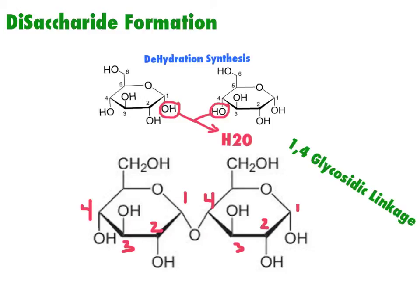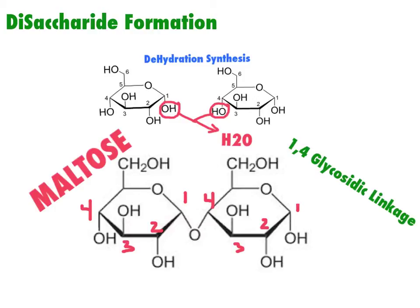Remembering how we numbered our carbons — 1, 2, 3, 4 on each glucose — we joined these two monosaccharides at carbon 1 and carbon 4. So we call this a 1,4 bond, and the special name for this type of bond is a glycosidic linkage. The bonds that hold all polysaccharides, oligosaccharides, or disaccharides together are glycosidic linkages, and the 1,4 tells us which hydroxyl groups were attached. This disaccharide formed from two glucoses is called maltose — you might be familiar with that toasty bread scent, used to make malted beverages.